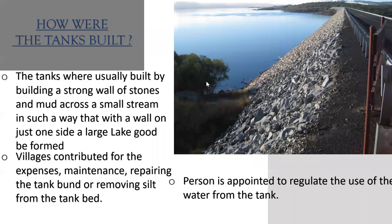How were the tanks built? Who built these tanks and how? See the picture here. They used stones and mud to build these tanks. Tanks were usually built by constructing a strong wall of stones and mud across a small stream. You can see the water stream, and across this stream a tank was built. A wall was built with stones and mud in such a way that, with a wall on just one side, a large lake could be formed.